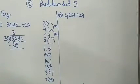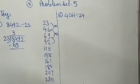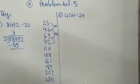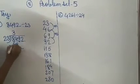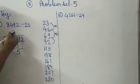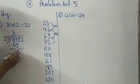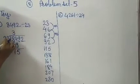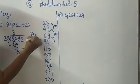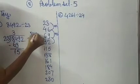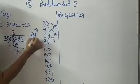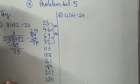Now subtract: 4 minus 9 — you can't do that, so 14 minus 9. After 9, count up to 14: 10, 11, 12, 13, 14 — it is 5. And here we take one borrow, so 7 minus 6 is 1. You can do this orally or you can solve it separately also.